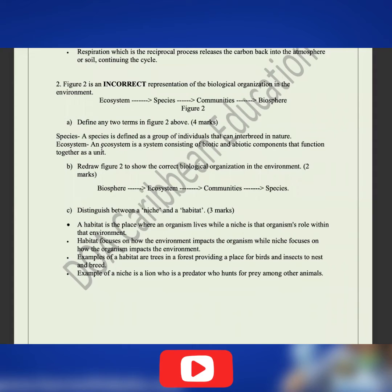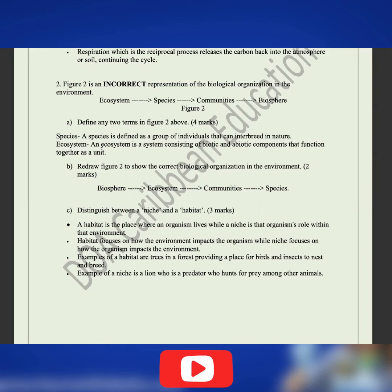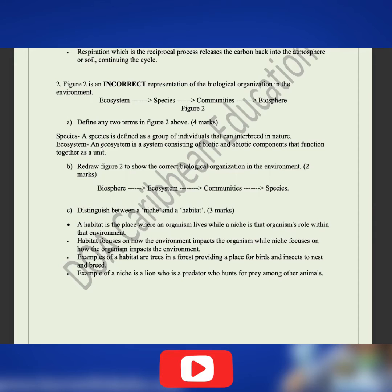Part B says redraw figure two to show the correct biological organization in the environment. If a community is a group of two or more species, then community comes after species. And since the biosphere is the collection of all ecosystems, ecosystem comes before biosphere. So the correct trajectory is: species → community → ecosystem → biosphere.